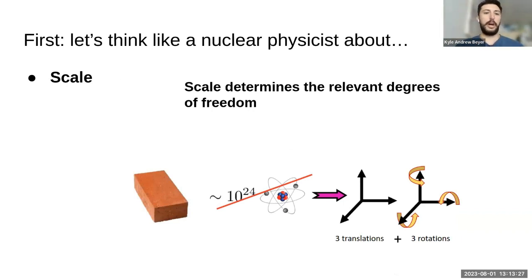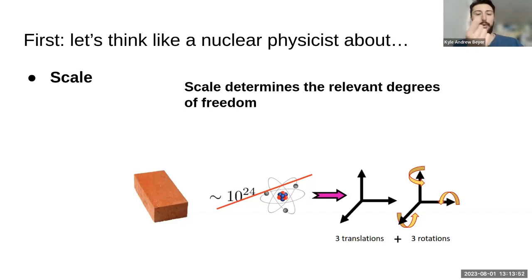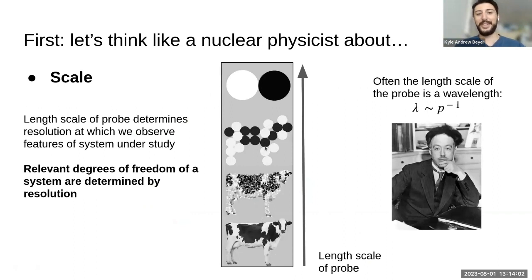One thing nuclear physicists think about a lot is the concept of scale — the resolution scale with which you observe a system determines the relevant degrees of freedom you can use to describe that system. Take a brick as an example. On a macroscopic scale, a brick has something like 10 to the 24 atoms, but those are not relevant degrees of freedom — the relevant ones are its six degrees of freedom: translation and rotation. It's only when you zoom in by shining an x-ray, probing much smaller length scales, that the degrees of freedom change. Here's a fun picture of a cow that illustrates how changing length scale resolves different degrees of freedom.